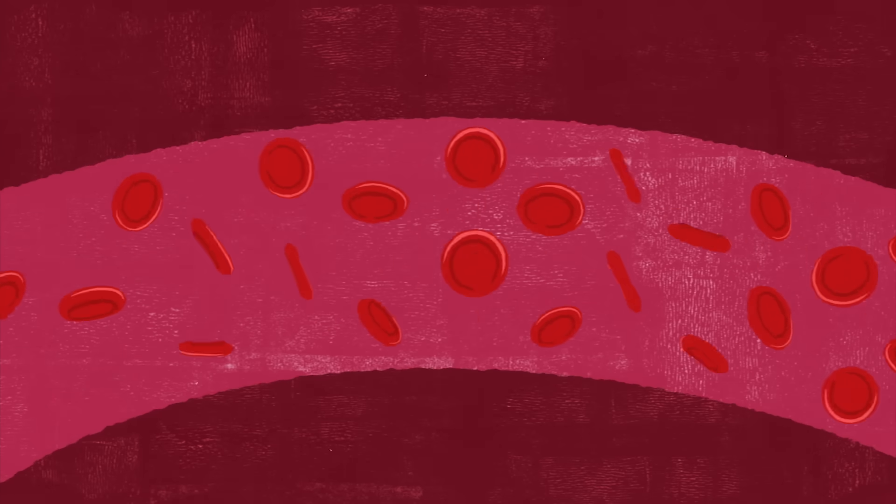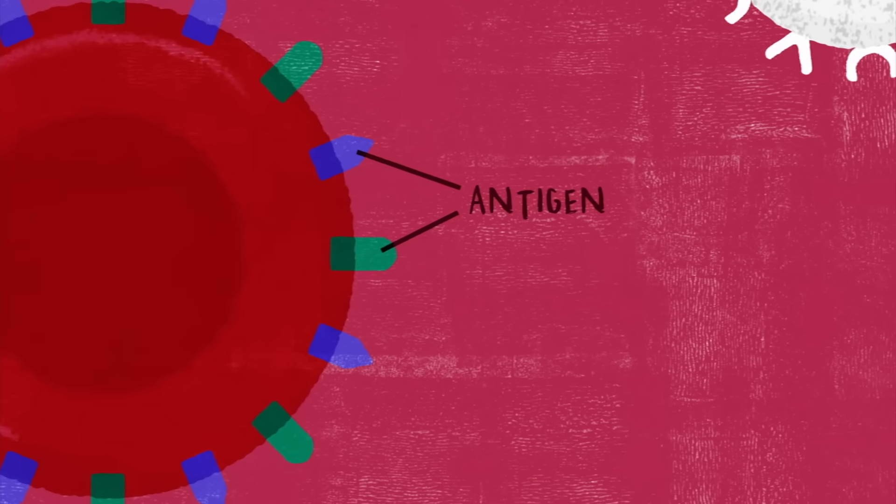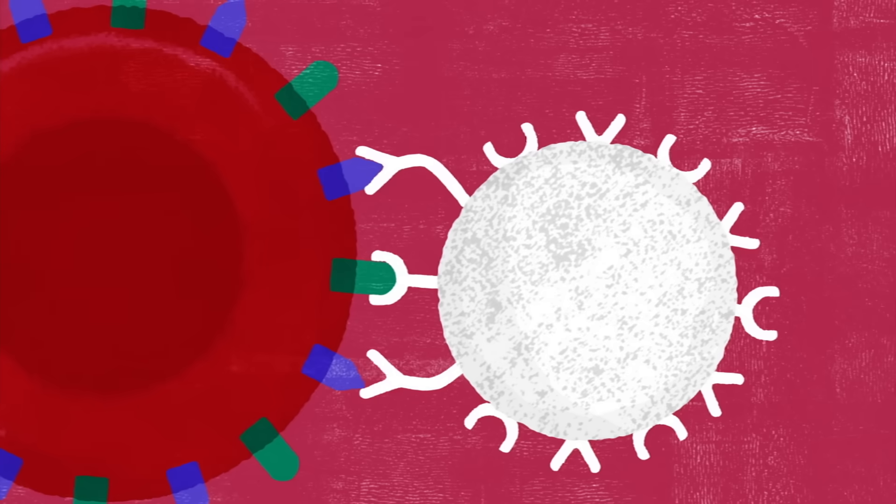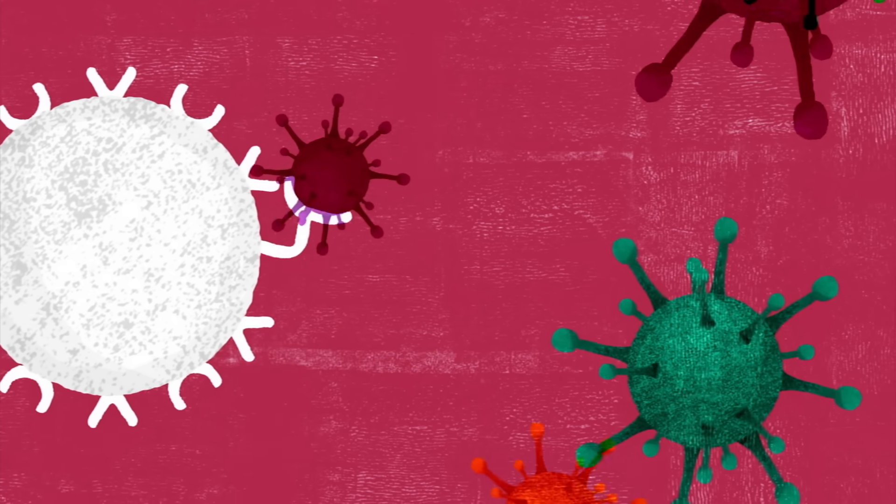But they also have another kind of complex protein on the outside of the cell membrane. These proteins, known as antigens, communicate with white blood cells, immune cells that protect against infection.